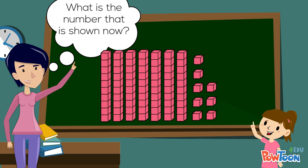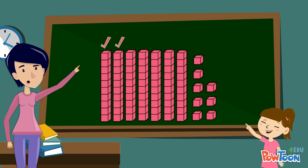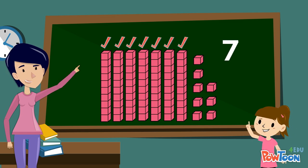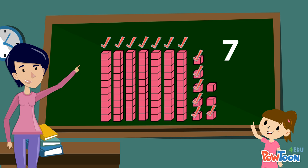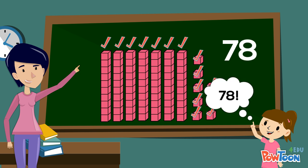What is the number that is shown now? One, two, three, four, five, six, seven. One, two, three, four, five, six, seven, eight. Seventy-eight.